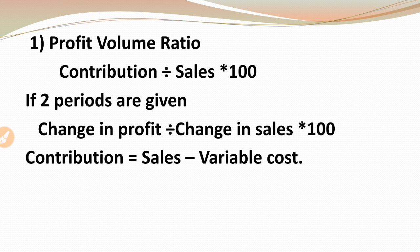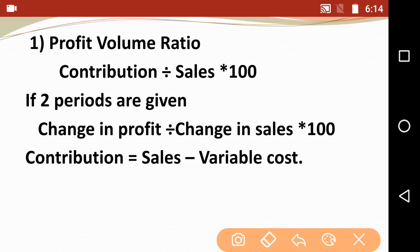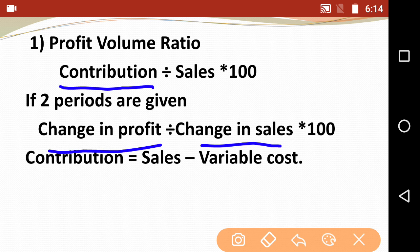Number one is Profit Volume Ratio, known as PVR. The formula is: Contribution divided by Sales, multiplied by 100. PVR will always come as a percentage — typically 20%, 25%, 30%, 40%, or 33.33%. If two years' data is given, the formula becomes: Change in Profit divided by Change in Sales, multiplied by 100. Take the difference in profit and difference in sales for the two periods, divide, and multiply by 100.